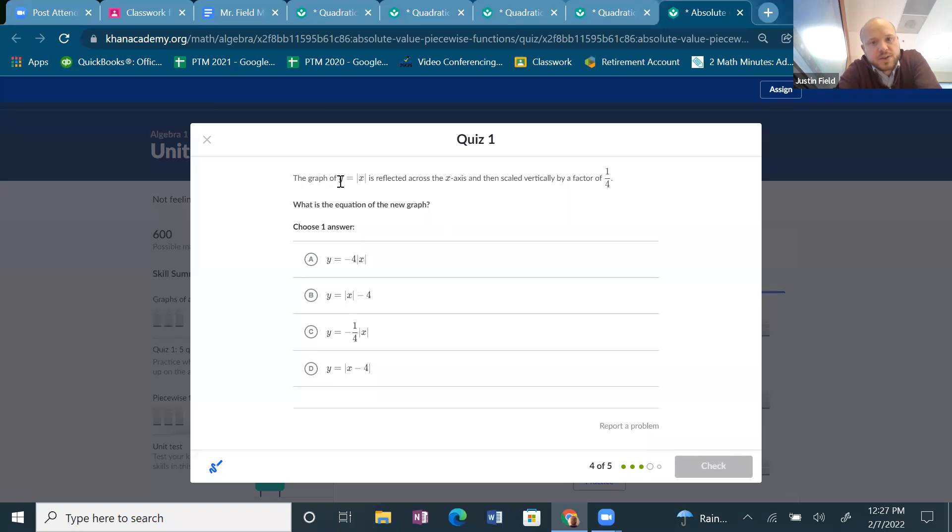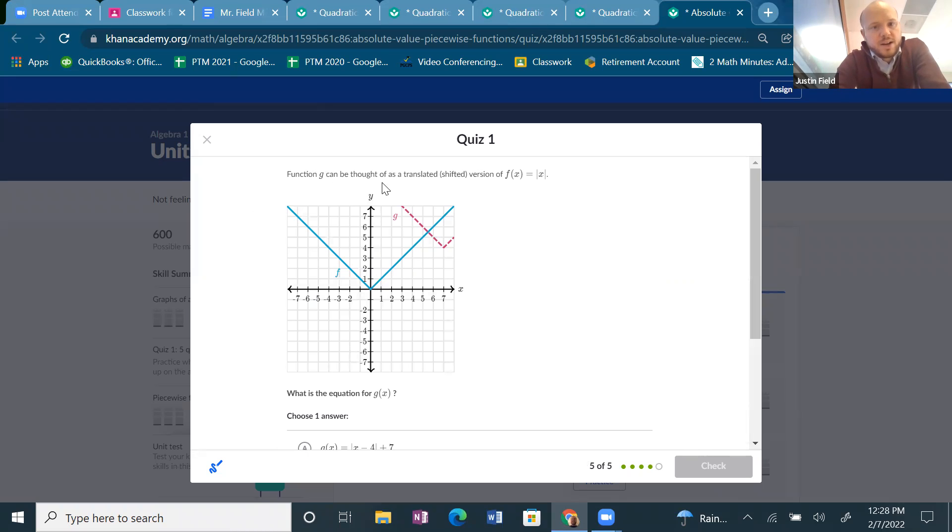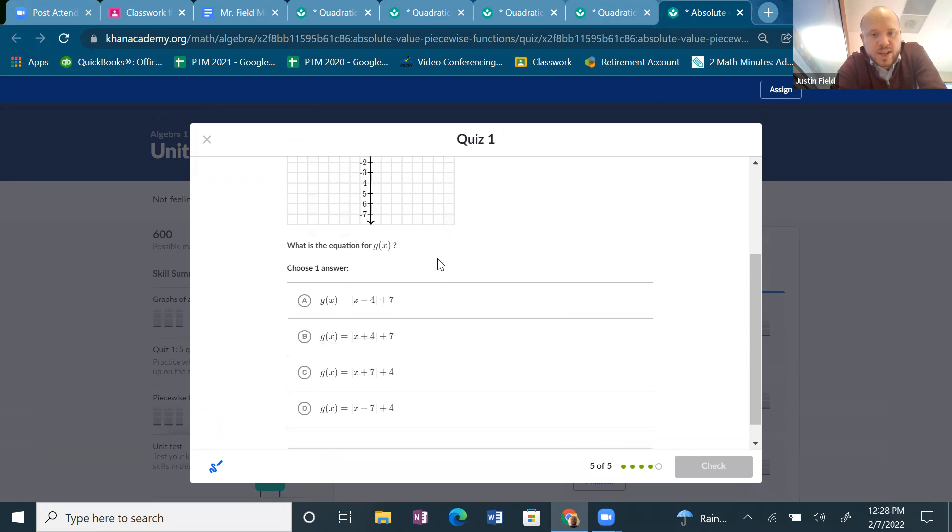All right. The graph of y equals the absolute value of x is reflected across the x axis and then scaled vertically by a factor of one fourth. So the reflection means there's a negative in front and then scaled vertically by a factor of one fourth means there's a one fourth in front. So it must be this one. Last one. Function g can be thought of as a translated shifted version of f of x equals the absolute value of x. Okay. So let's just look and see how much is it shifted. Well, the vertex is at seven, four. So it shifted right seven. So I should see an x minus seven and it shifted up four. So I should see a plus four outside. It is minus seven on the inside, plus four on the outside.